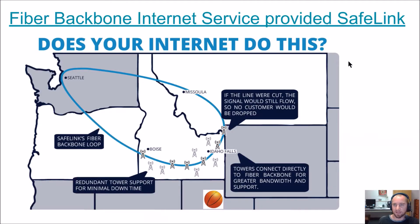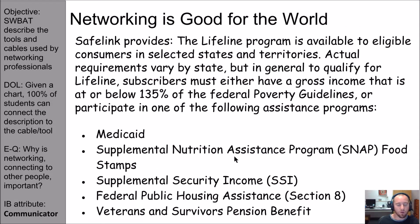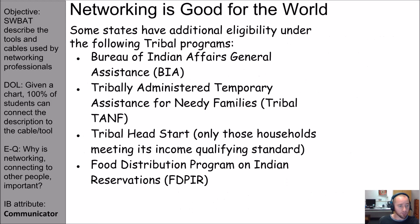We went from backbone to rat's nest. We can still call certain things backbones — for example, a company like Safelink could create a fiber backbone and provide internet service to people in rural areas. Networking is good for the world. Safelink has a Lifeline program where eligible people get free or reduced internet — similar to free or reduced lunch at school, but for adults. The United Nations has deemed the internet a basic human right. There are organizations that will hook you up with internet if you need it.